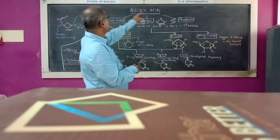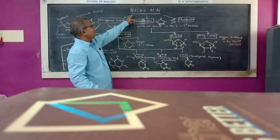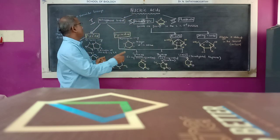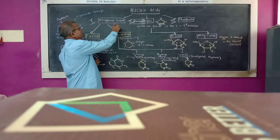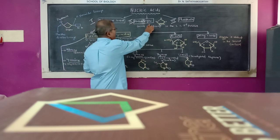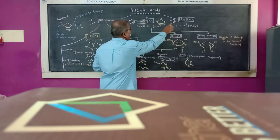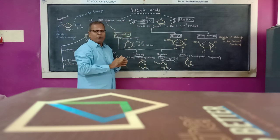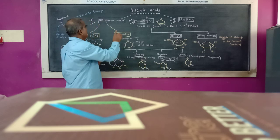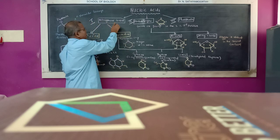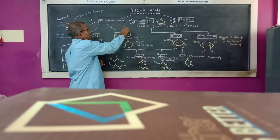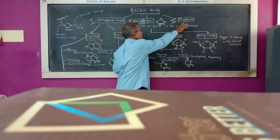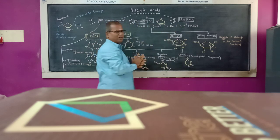Nucleic acids — DNA or RNA — are chemically composed of three components: nitrogenous bases, pentose sugar, and phosphate.